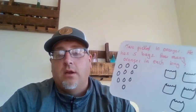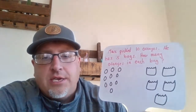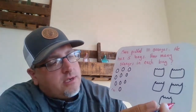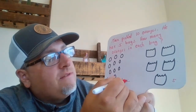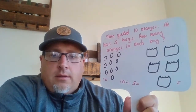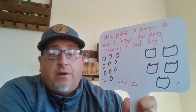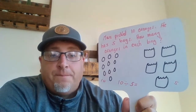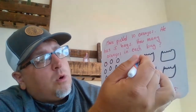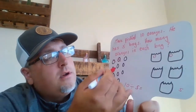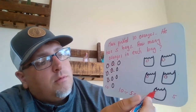One more problem — let's tackle this last problem for review. It says Mark picked ten oranges. Here are my oranges over here. He has five bags. How many oranges in each bag? So we know we have ten oranges and five bags. Ten oranges divided into five bags. Let's pretend I have a box full of oranges — I've got to put one in each bag to divide them. Ten divided by five. Let's just take our oranges and put them in the bags: one orange here, one orange here, one orange here, taking an orange and moving it over into the bag.